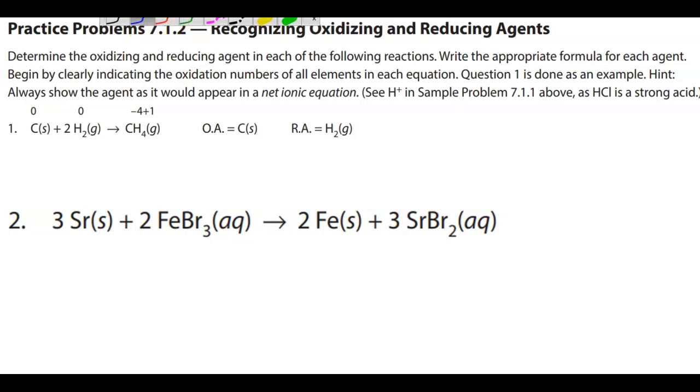All right, so let's take a look at some questions here. For each of these ones, it says determine the oxidizing and reducing agents. Write the appropriate formula for each agent. Begin by clearly indicating the oxidation numbers of all elements. Question one is done as an example.